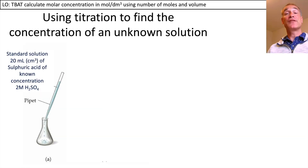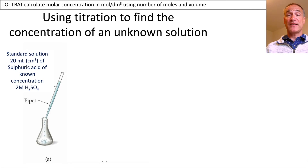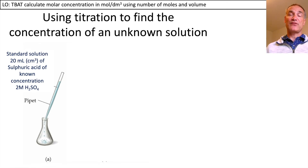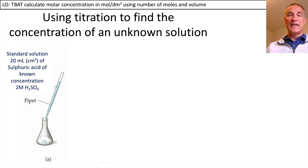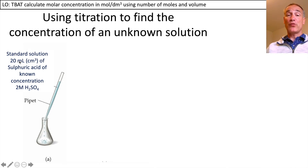Now let's look at how we use titrations to find the concentration of an unknown solution. If you're watching this for combined science GCSE, you can stop the video now. If you're a triple science student for AQA, or an applied science BTEC level three student, you need to know this. A standard solution is a known concentration made up very accurately. Here we have sulphuric acid at 2 molar, meaning 2 moles per decimetre cubed.